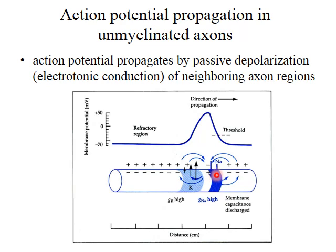The answer is that the sodium channels immediately behind the active portion of the membrane will be inactivated. They will open, but then the inactivation ball and chain will swing into place. So for quite a distance back, the sodium channels will be in an inactive state, and thus the action potential cannot travel backwards, but only forwards.